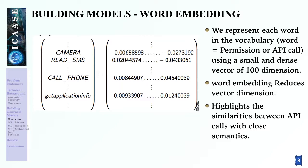Just a few words about word embedding. Using word embedding, we represent each word in the vocabulary — either a permission or an API call — using small and dense vectors of 100 dimensions. This representation reduces the dimensionality and highlights the similarities between API call models with clear semantics.